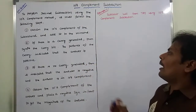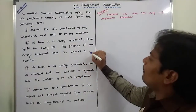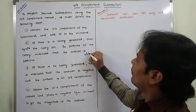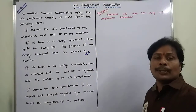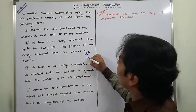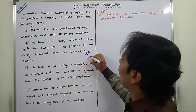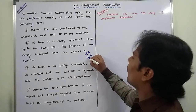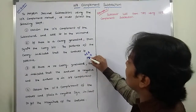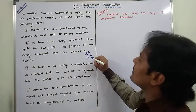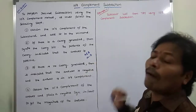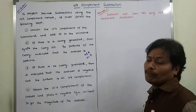Suppose A and B are two decimal numbers. We have to perform A minus B operation. Here A is called as the minuend and B is called as the subtrahend.